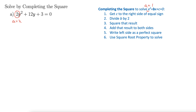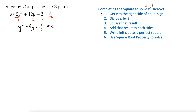So I'm going to divide everything by 2. I just divided both sides by 2. That leaves us with y squared plus 6y plus 3 halves equals 0. And now we are ready to proceed with step 1 because we are of the correct form.